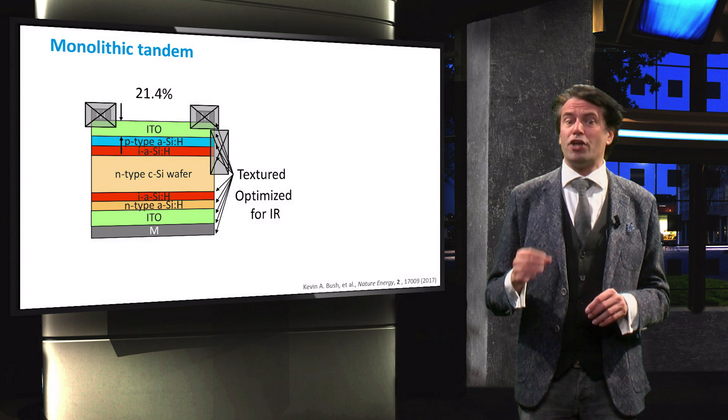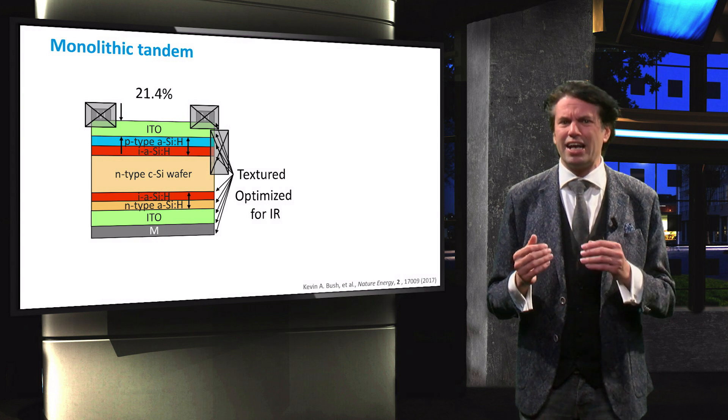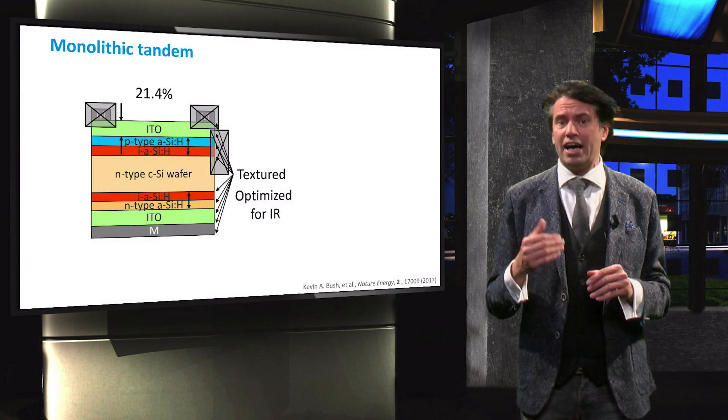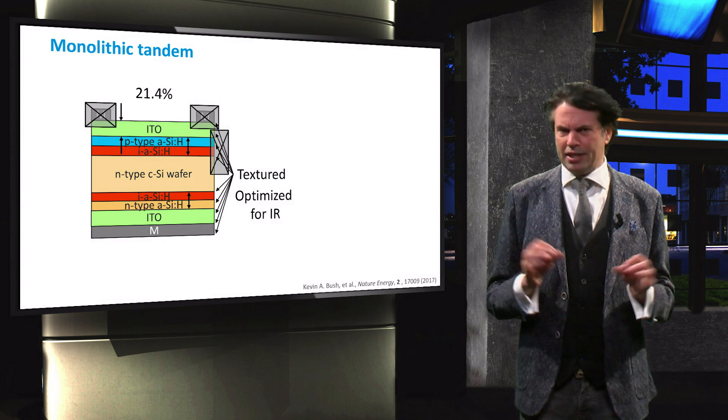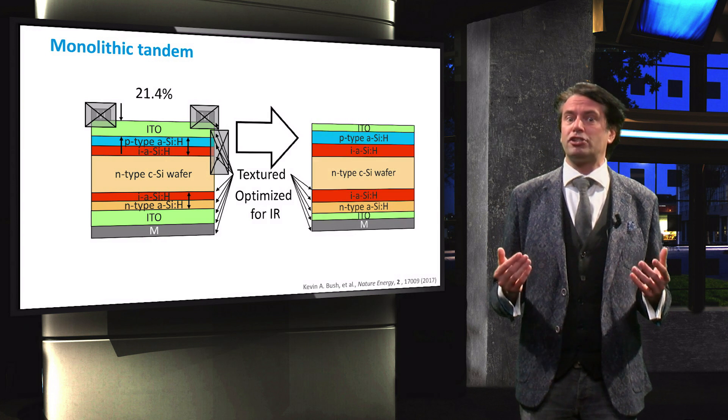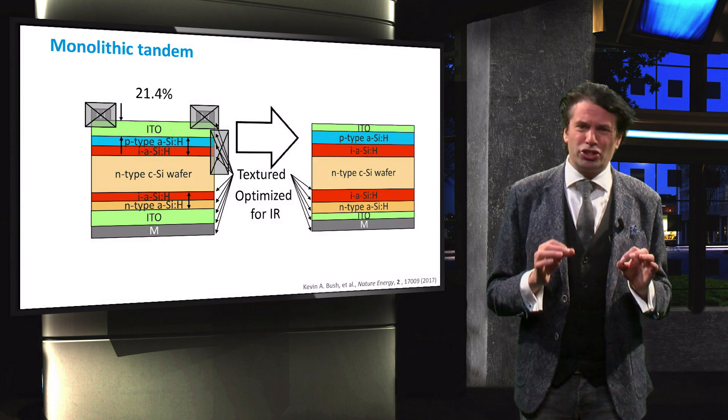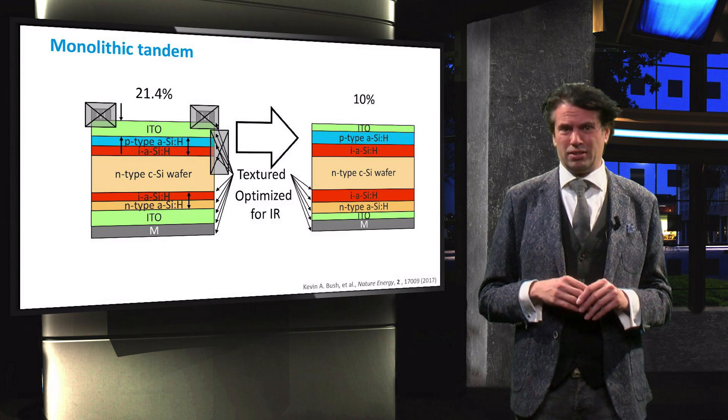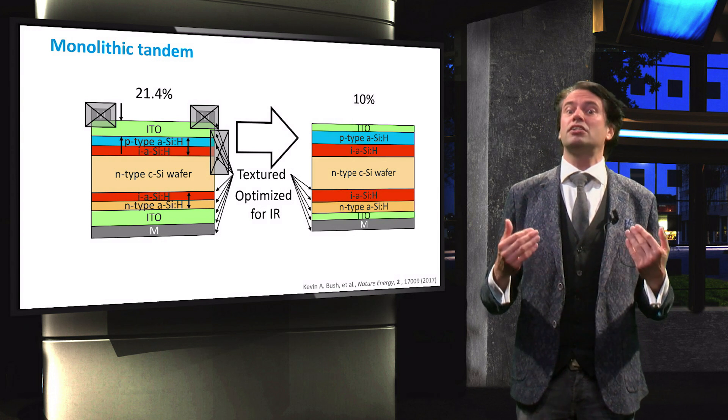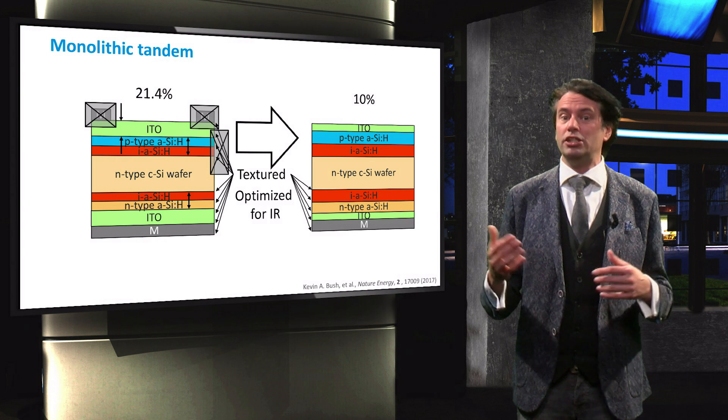Finally, the thickness of the amorphous silicon passivation layer is slightly increased for better passivation and carrier collection. These modifications reduce the efficiency of the cell as a single junction to 10%. This illustrates how sensitive the device performance is to these design features.